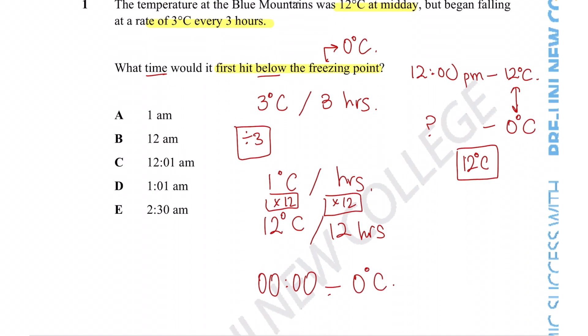Now if we selected answer option B, we would be incorrect because the question says what time would it first hit below the freezing point. So it's always very important to read the question quite thoroughly so we don't miss important information like that.